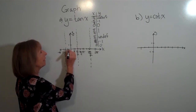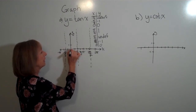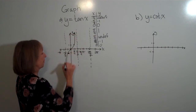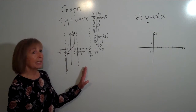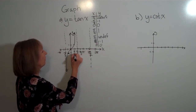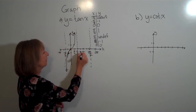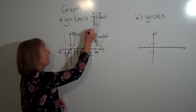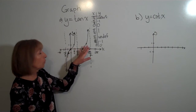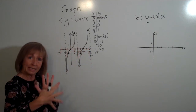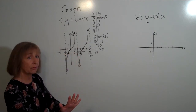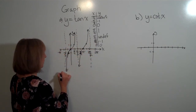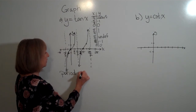At negative pi over 4 the tangent is negative 1; at 0 it's 0; at pi over 4 it's positive 1. The tangent function then goes to 3 pi over 4 where it's negative 1 again, and at pi it's 0 again, and at 5 pi over 4 it's 1 again — it's repeating the same picture. So looking at where the graph repeats, it goes from 0 to pi before starting over. The period of the tangent function is pi.